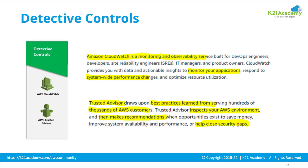The next set of security services is detective controls, which detect any unprecedented activity happening in your account. In an AWS account there can be thousands of resources and tens of thousands of employees accessing it, making it very difficult to keep track of everything. Services under detective control include CloudWatch, a dedicated monitoring service, and Trusted Advisor, which verifies your workloads based on five categories: security, cost optimization, performance, high availability, and service limits — giving you suggestions on actions to take.